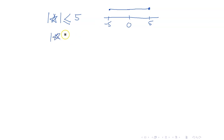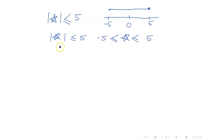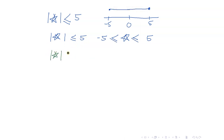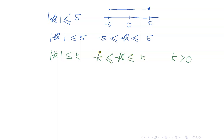So to remove the absolute value sign for less than, you just sandwich the expression inside the absolute value sign by this number. In general, if we have the absolute value of ★ less than or equal to k — and my assumption here is that k is positive — this means that ★ is sandwiched between negative k and k.